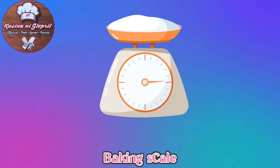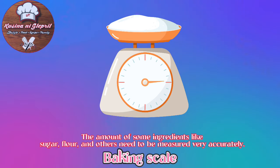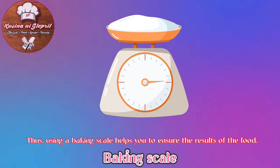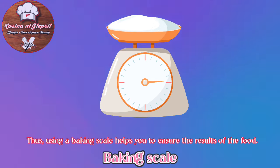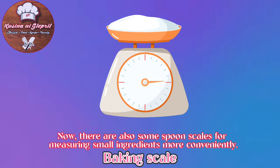Baking Scale: The amount of some ingredients like sugar, flour, and others need to be measured very accurately. Using a baking scale helps you ensure the quality of the food. There are also some spoon scales available for measuring small ingredients more conveniently.